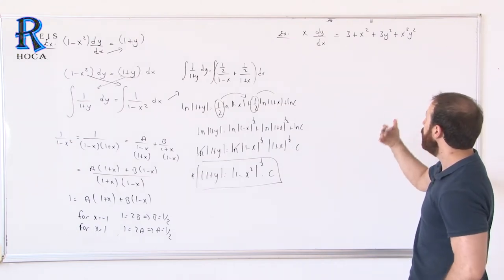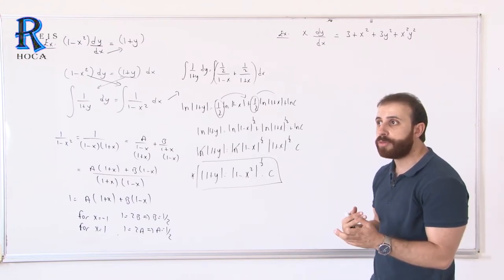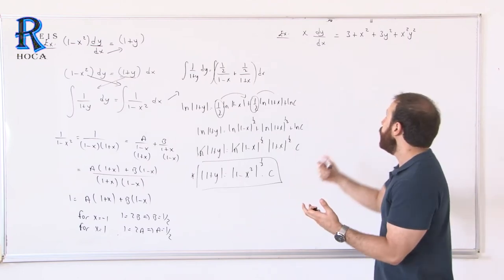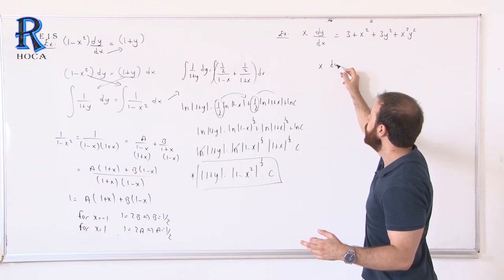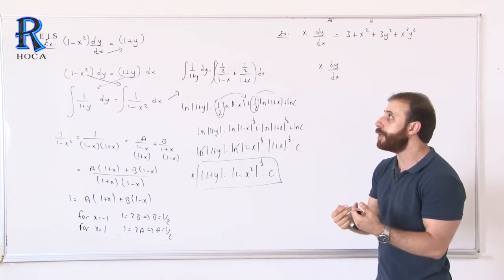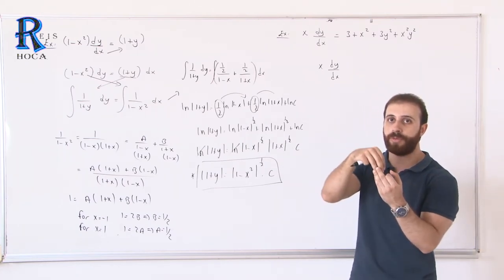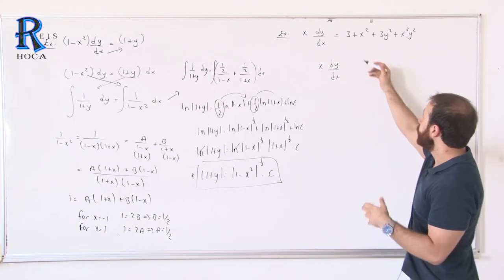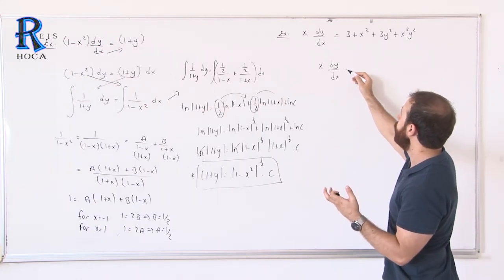For the second problem, first we must check if it is separable — we need to separate all terms of x and y. Here, x and y terms are not already separated, but we can rearrange. For a separable equation, in front of dy there must be only y, and in front of dx only x. But currently x and y appear together, so they are not separated.